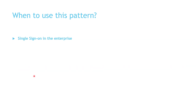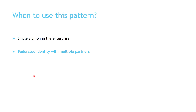Now let's see when you should use this pattern. When you want to implement single sign-on in your organization, it will be much easier for employees to remember just one corporate username and password to authenticate with hundreds of different applications. It also makes security management easier — one click disables an employee's access to all applications. You can also use this pattern to authenticate business partners without creating accounts in your Active Directory, and many SaaS applications now offer federated identity as an authentication option.